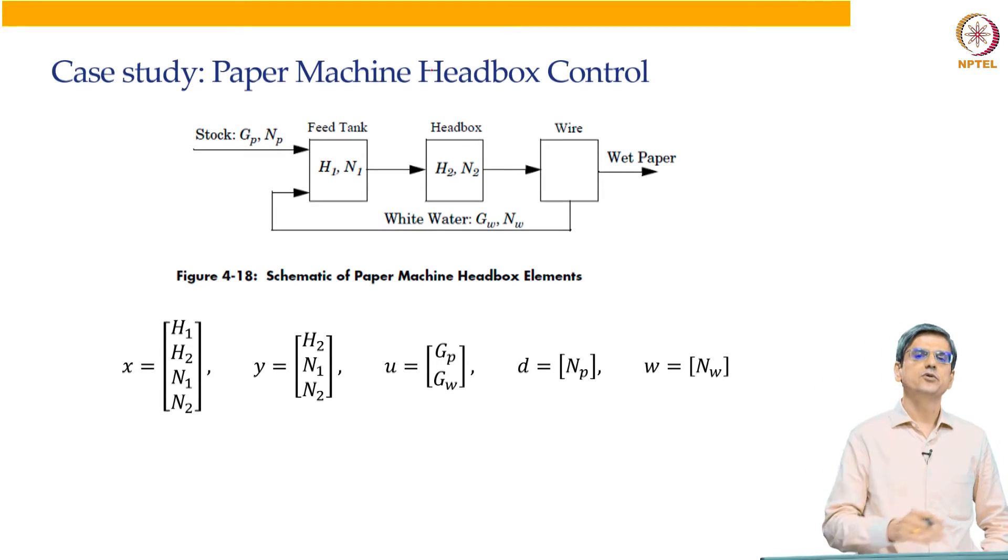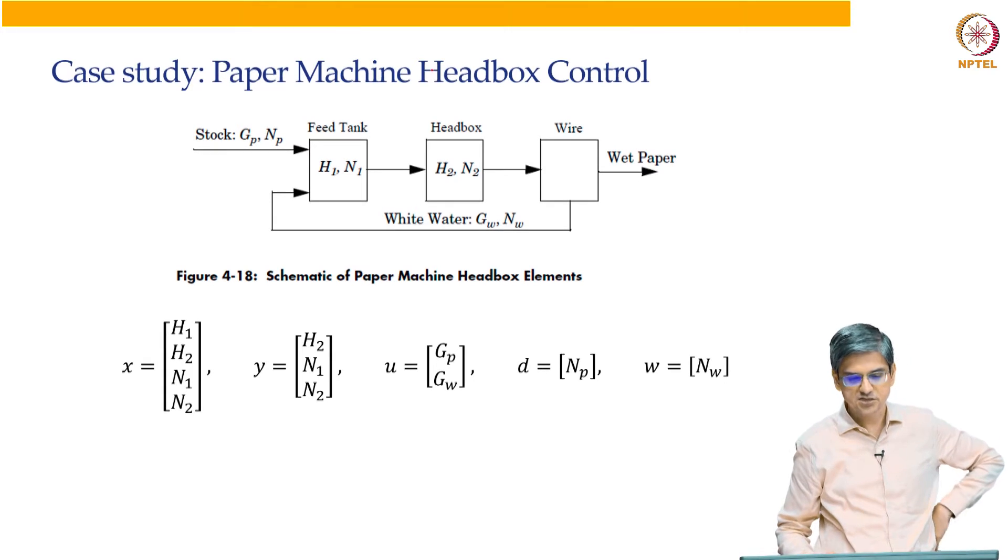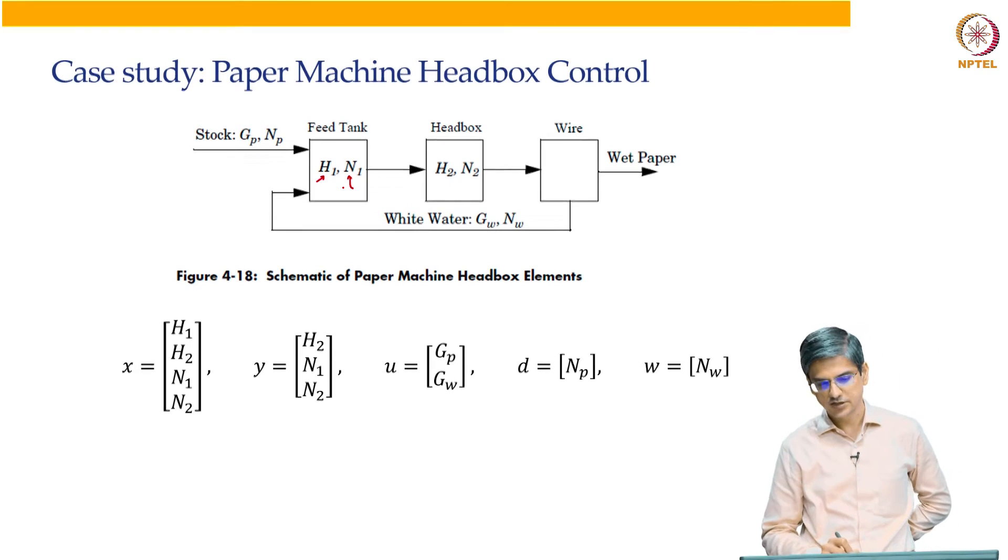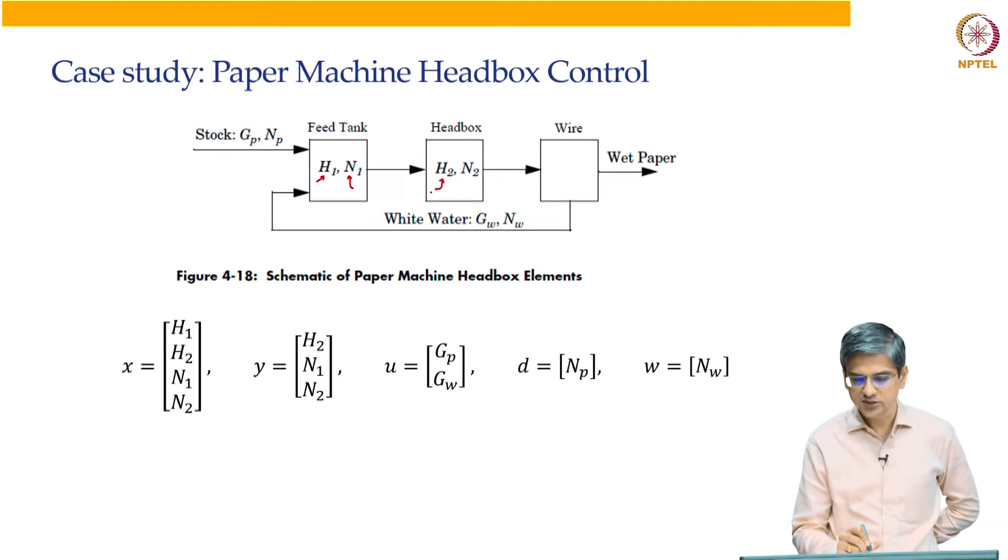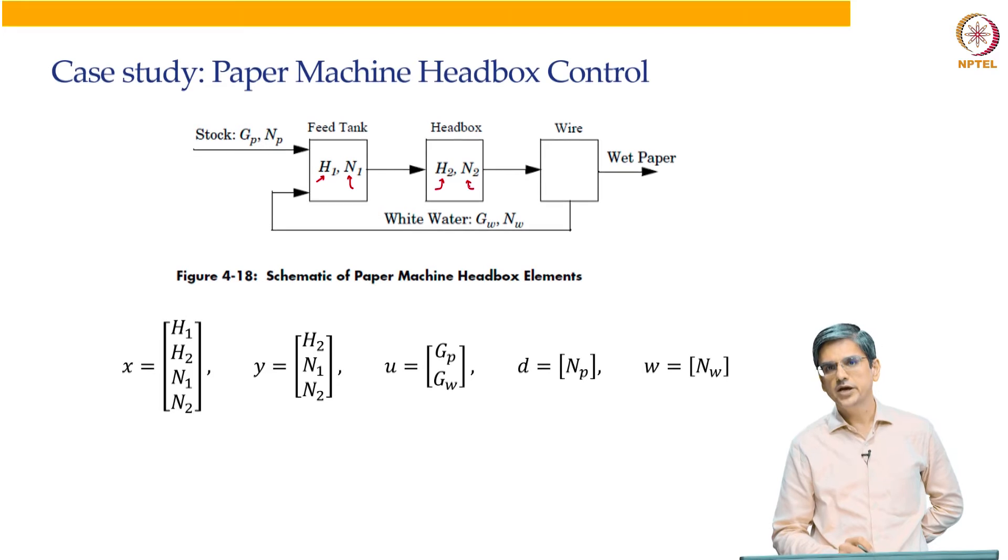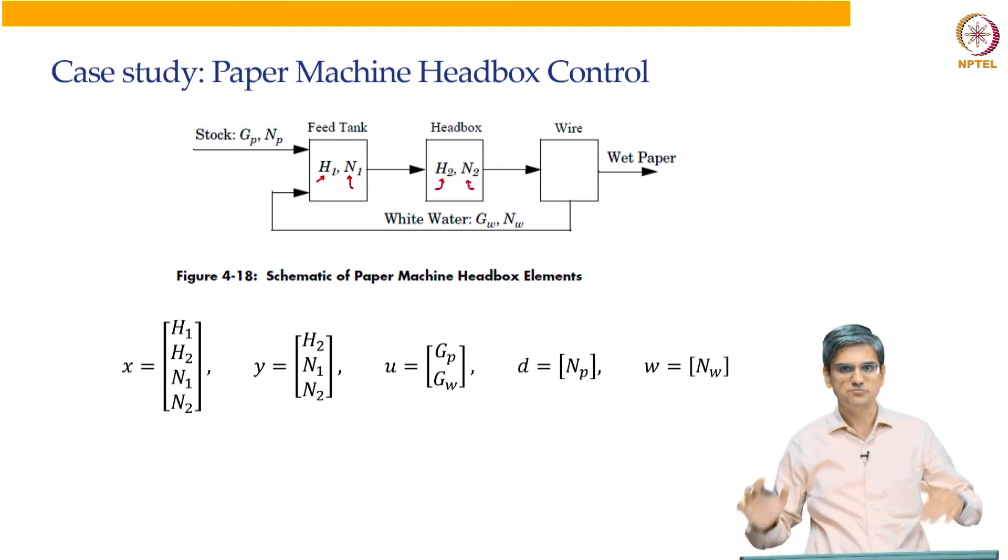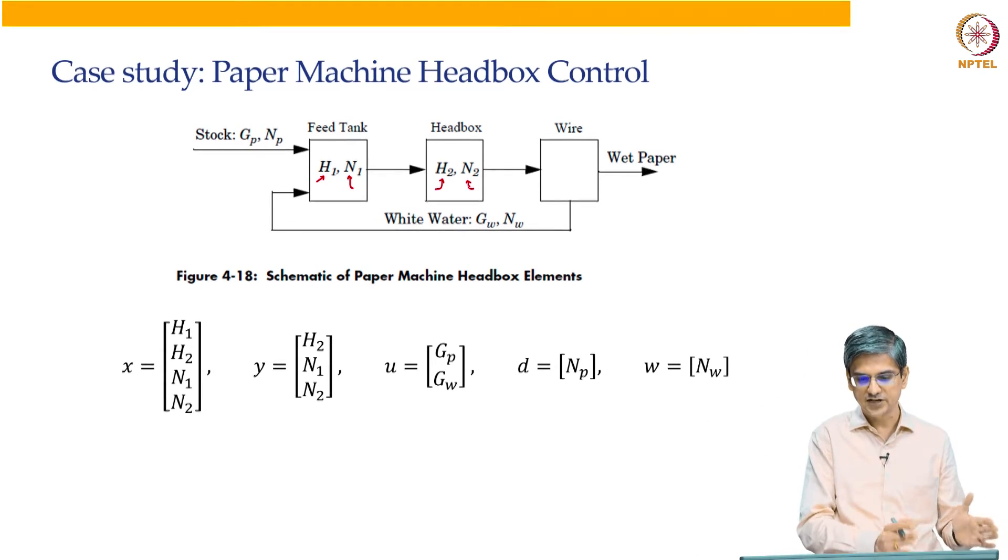So this is basically what is known as a headbox in a paper machine. You are manufacturing paper from the pulp and the various things that are involved in that process can be controlled. You have a feed tank that is shown over here and you have what is known as a headbox. There is the level in the feed tank which is H1, and there is a consistency, a variable called consistency which is N1. We have a headbox where the level in the headbox is H2 and we have the consistency N2. This particular paper goes through this wire and you get a wet paper which is then dried. We are only looking at the feed tank plus headbox.